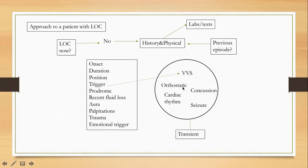For example, if the patient had a trigger — such as coughing really hard — or an emotional situation that made them feel different, after which they lost consciousness and then suddenly recovered, they are more likely to have vasovagal syncope. They may also have had a prodrome right before.